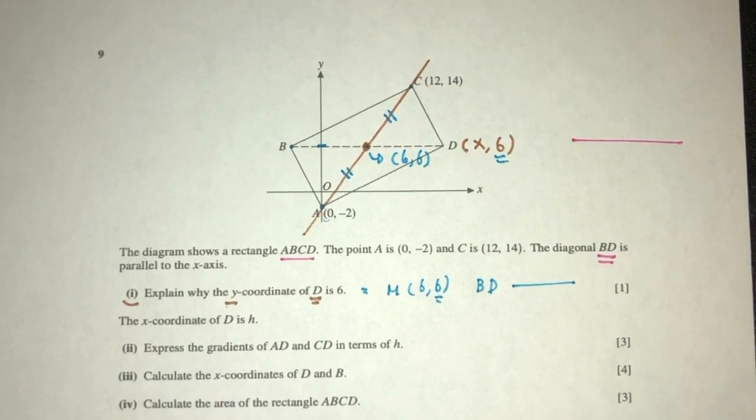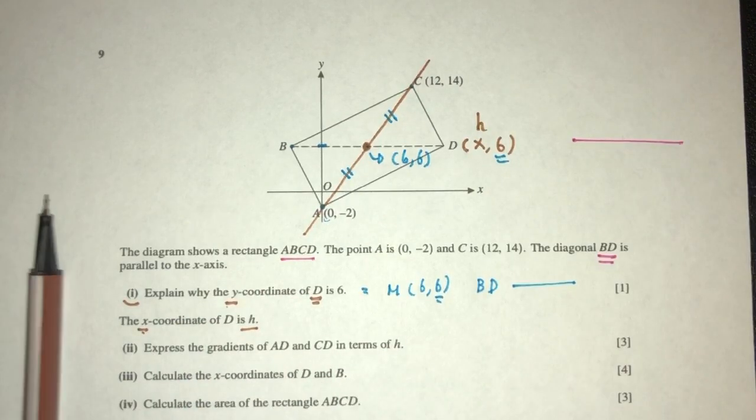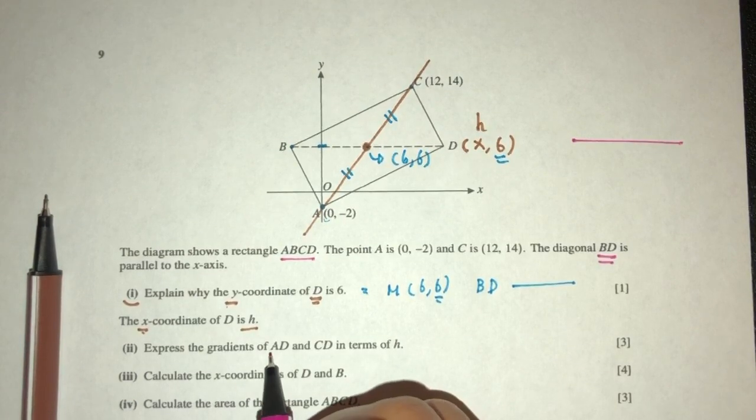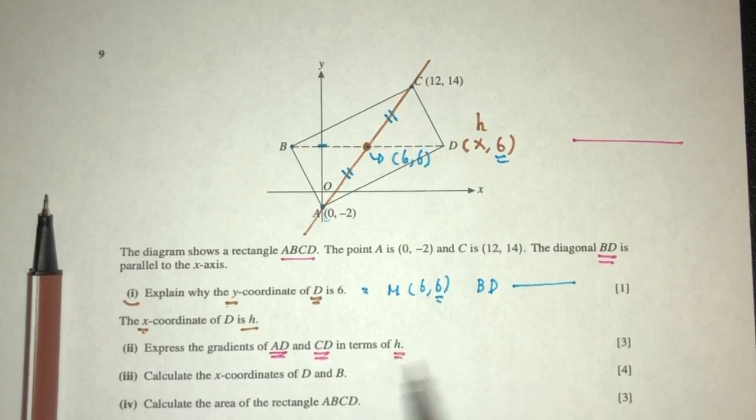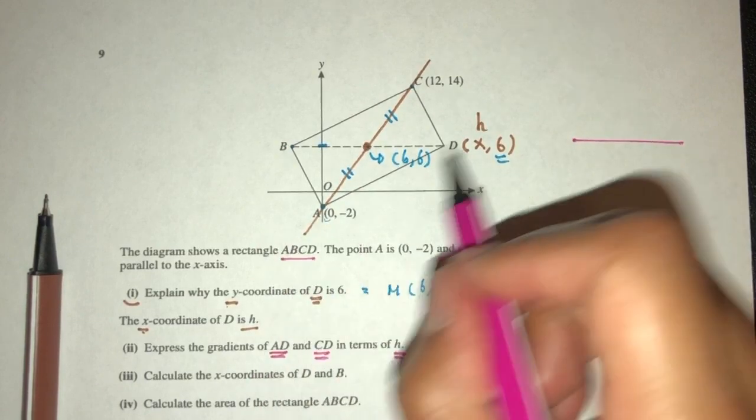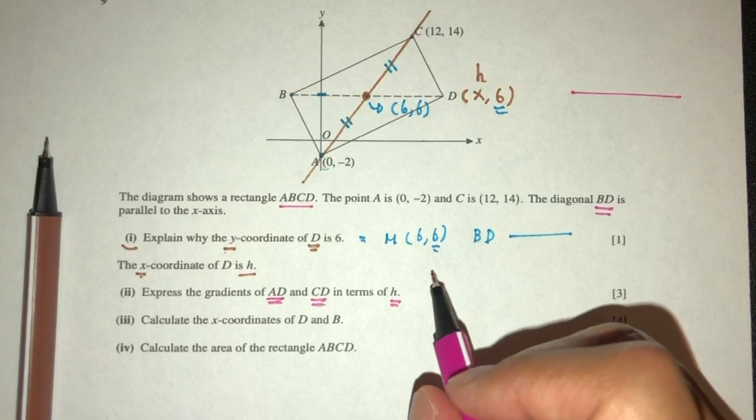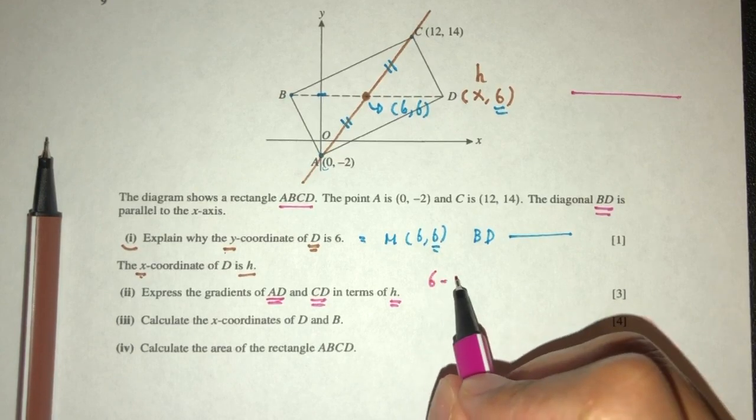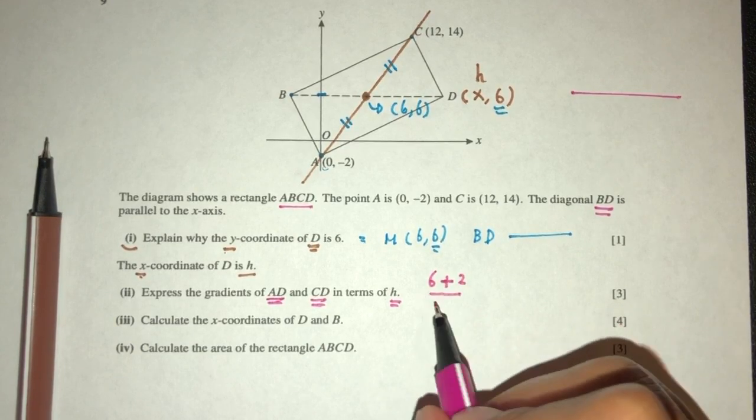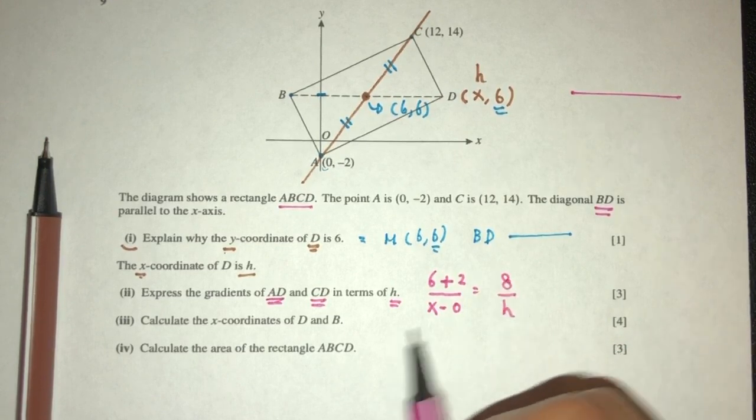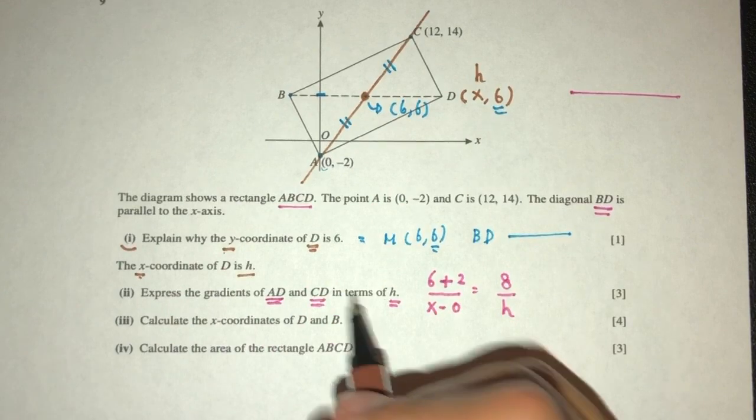Now, we have the x value of D is h. Now we don't know. What else? Express the gradients of AD and CD in terms of h. So where's AD? AD is this one. So how do you find gradient? We have to use the formula. That will be y2 minus y1 over x2 minus x1. That should be 8 over h, because here it is h, the x value.